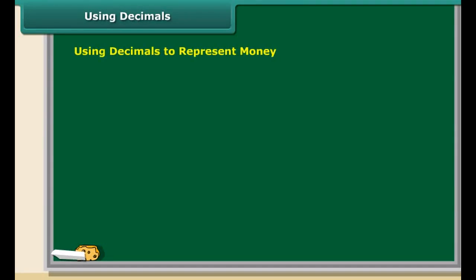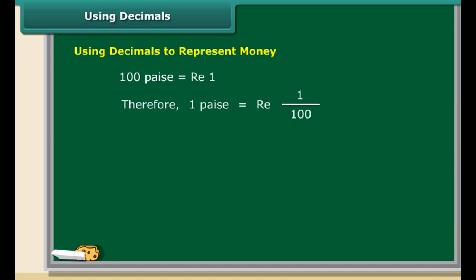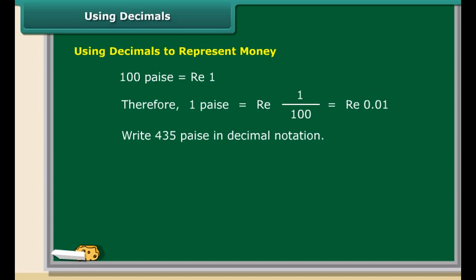Money can be represented using decimal notation. It is common knowledge that 100 paise are equal to one rupee. This means one paisa is equal to one hundredth of a rupee. We know that one hundredth can be written as 0.01 in decimal notation.